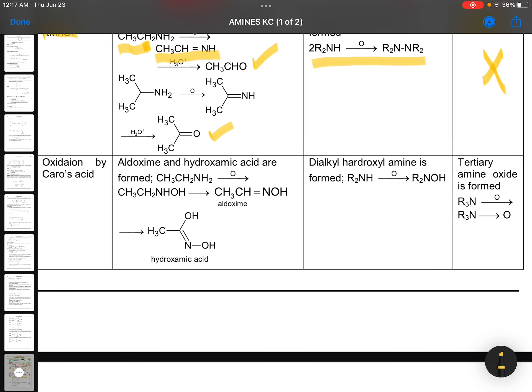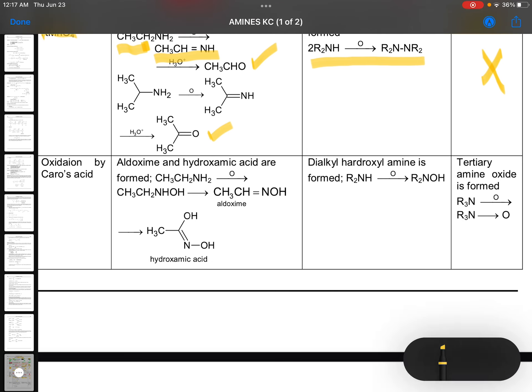Oxidation by Caro's acid. You know what is Caro's acid? Yes, H2SO5. H2SO5 is Caro's acid. When this primary amines react with Caro's acid, extra oxygen. With that extra oxygen, it is going to form such kind of compound. CH3CH2NHOH. And this can be converted into CH3CH double bond NOH. Dialkyl hydroxyl amine is formed when Caro's acid is used for secondary amines. R2NH is converted to R2NOH. Dialkyl hydroxyl amine. And tertiary amines, you will be getting the tertiary amine oxide. Oxidation by Caro's acid. Caro's acid is H2SO5. With that, you can expect all these reactions.